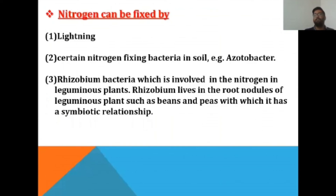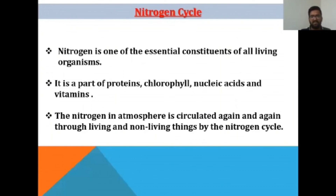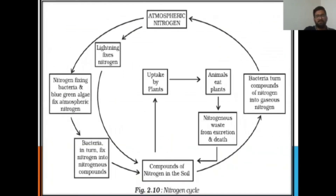Nitrogen is one of the essential constituents of all living organisms. It is a part of proteins, chlorophyll, nucleic acids, and vitamins. The nitrogen in the atmosphere is circulated again and again through living and non-living things by the nitrogen cycle. Atmospheric nitrogen is converted into usable nitrogenous compounds by nitrogen-fixing bacteria or blue-green algae, or it is fixed by lightning, and these nitrogenous compounds accumulate in the soil.